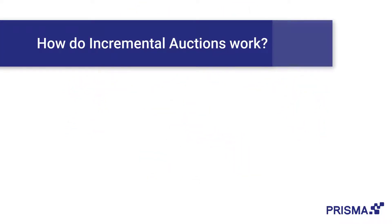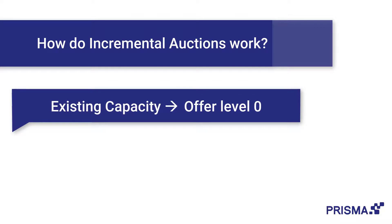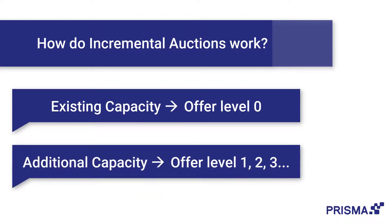An incremental auction works like this. Existing capacity is marketed in a long-term auction as a level 0 incremental auction. At the same time, a certain amount of so-called offer level auctions are added for the same network point, offering more capacity than is currently available.